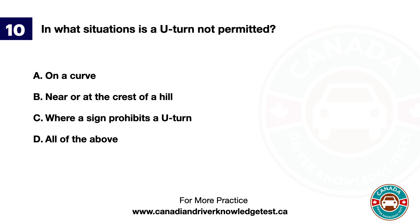Question 10. In what situations is a U-turn not permitted? A. On a curve. B. Near or at the crest of a hill. C. Where a sign prohibits a U-turn. D. All of the above. The answer is D. All of the above.